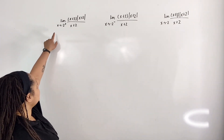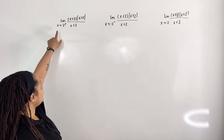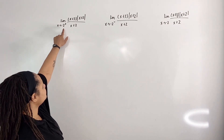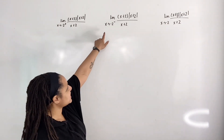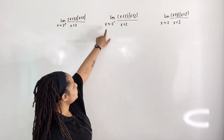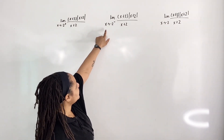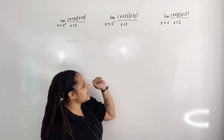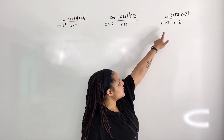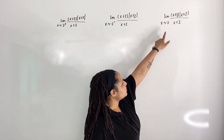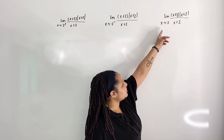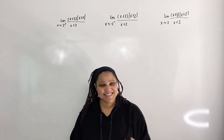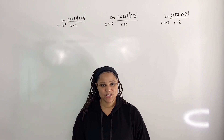For the first example, we are evaluating the limit as x approaches negative 2 from the right. For the second example, we are evaluating the limit as x approaches negative 2 from the left. And for the third example, we are going to evaluate the limit as x approaches negative 2.